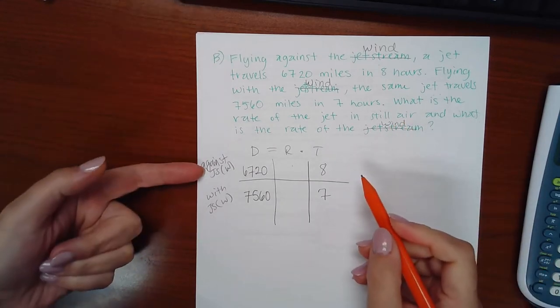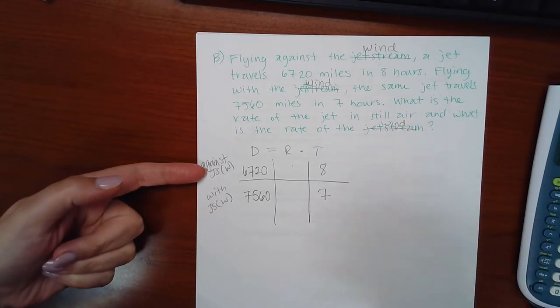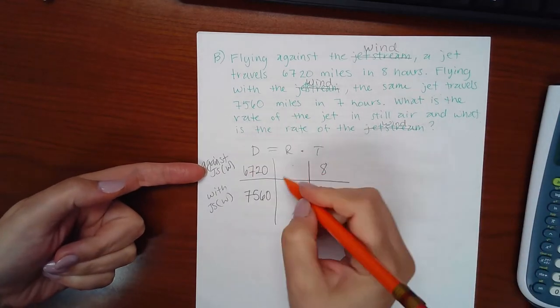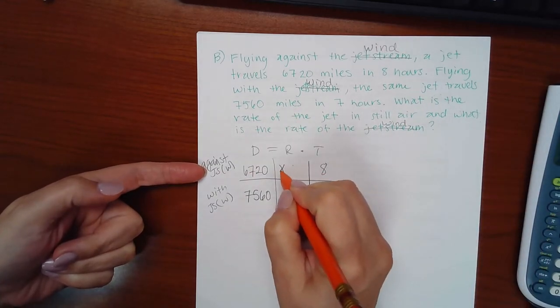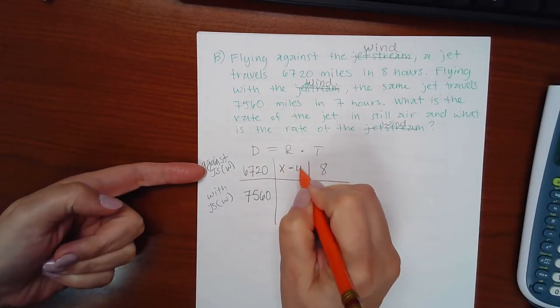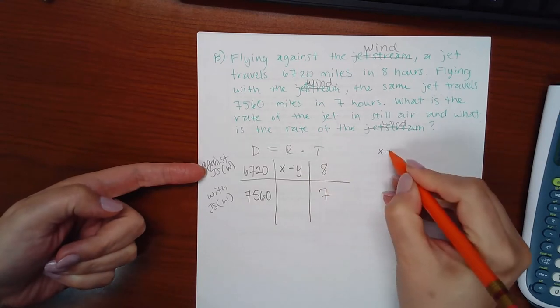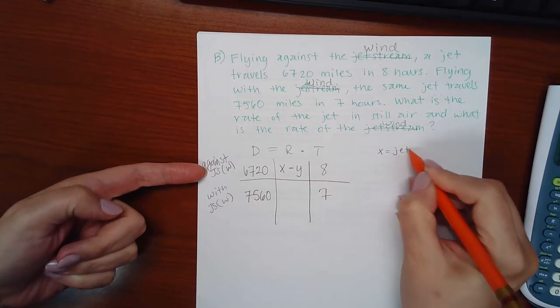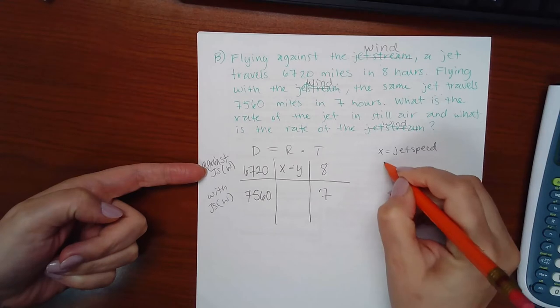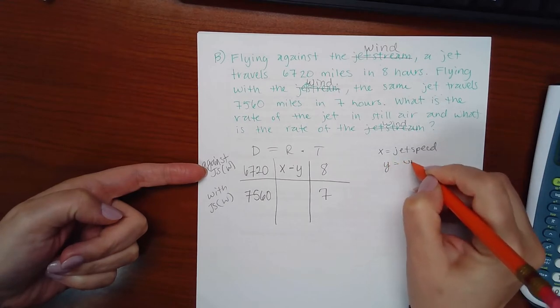So remember, if I'm going against it, the wind is going to slow me down. So no matter how fast my jet stream is, I'm going to get slowed down by the wind. So that means X equals the jet speed and then Y is going to be the wind speed.